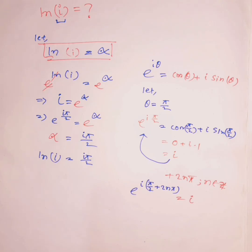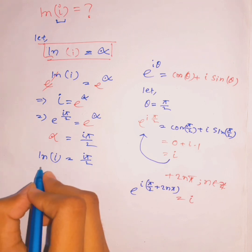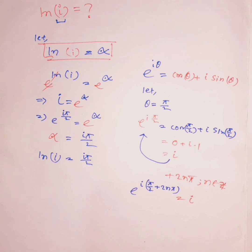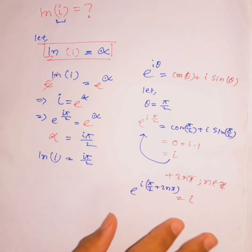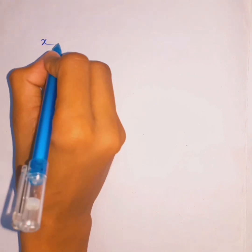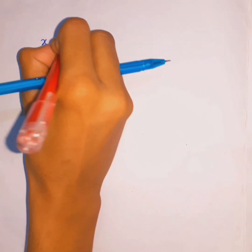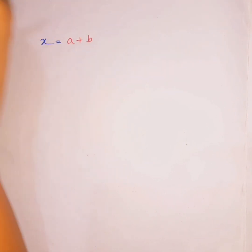Now we are going to find the value of ln(i) using another method — we'll use the idea of polar form. Suppose a complex number x equals a plus bi, which is the standard form of a complex number.